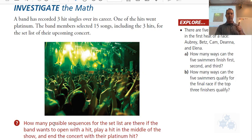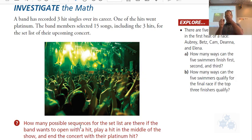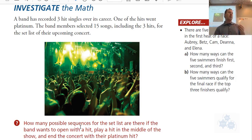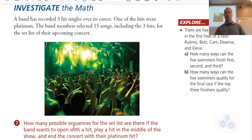The question asks how many possible sequences — now sequences is an important word. A sequence is one item after another, so the wording means you want to consider a definite order. There can be a different sequence of the same events. So order matters here, for the songs that are not the hits for sure.